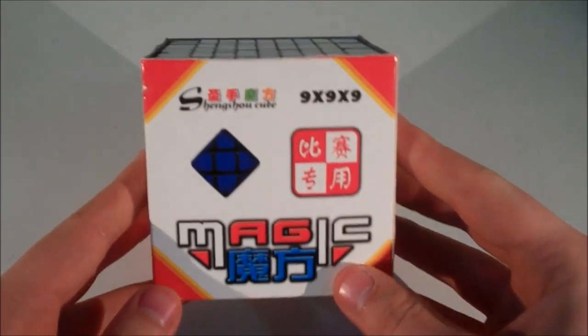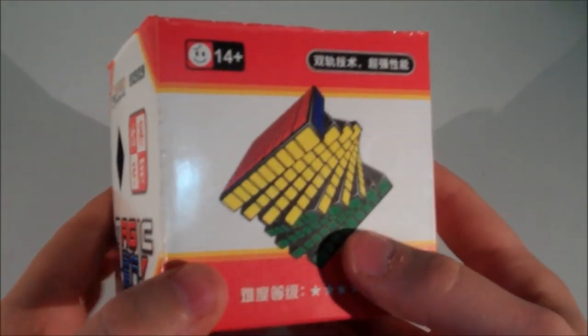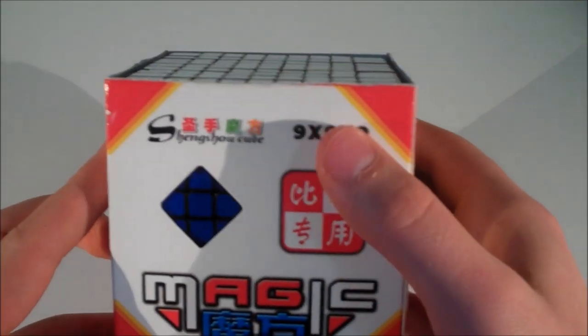As you can see, the cube comes in pretty much the same box as most of the Shengxiao cubes, apart from obviously it has the 9x9 picture on it and it also tells me that it's a 9x9.